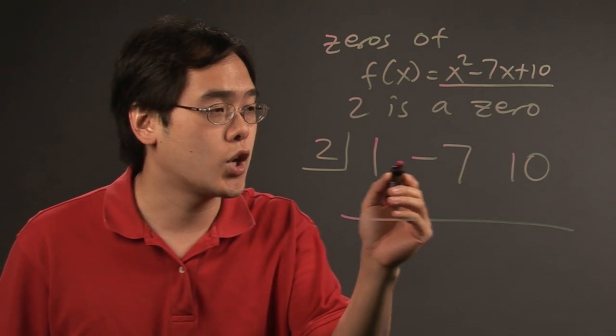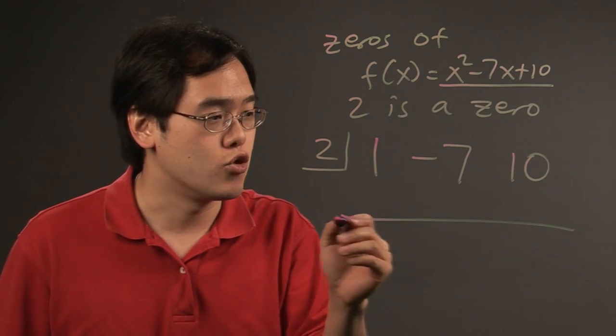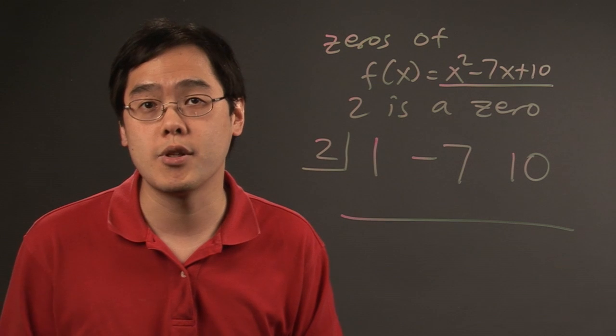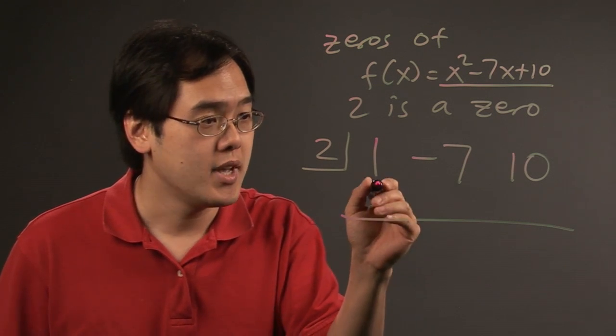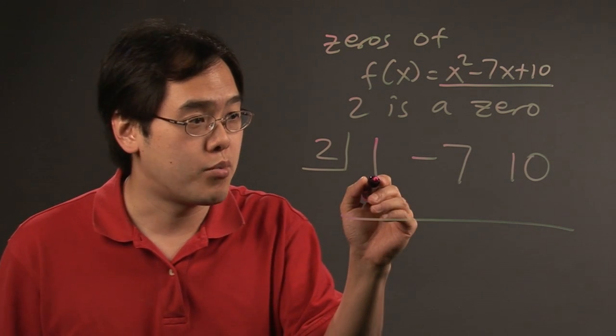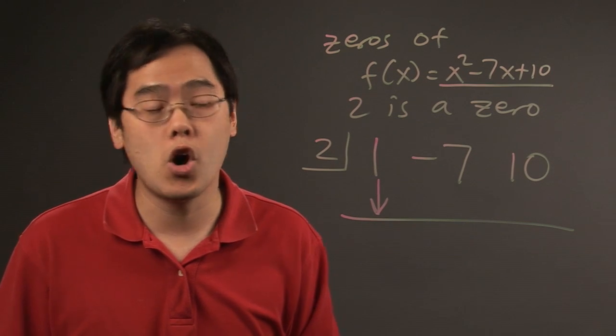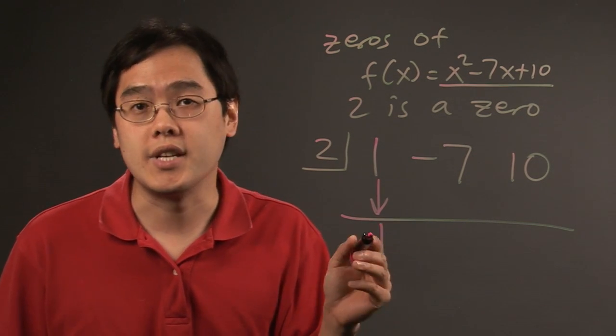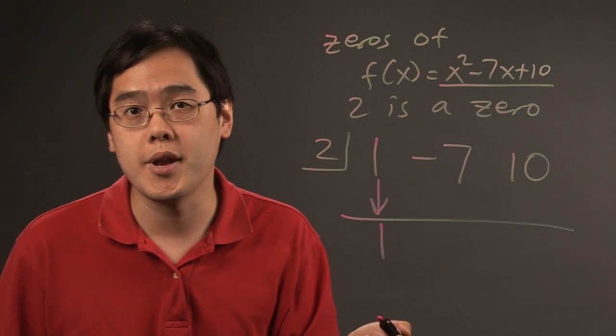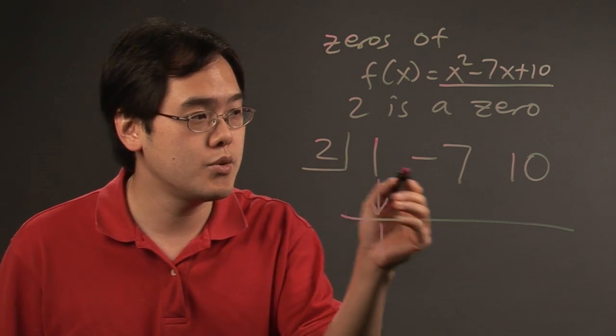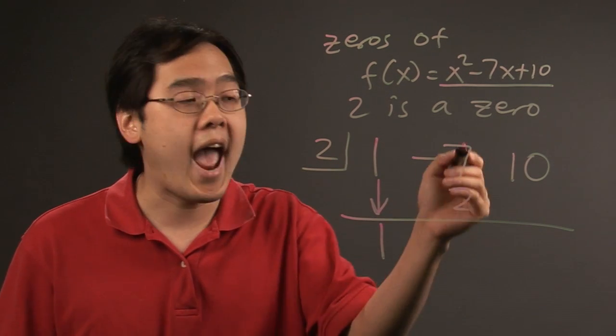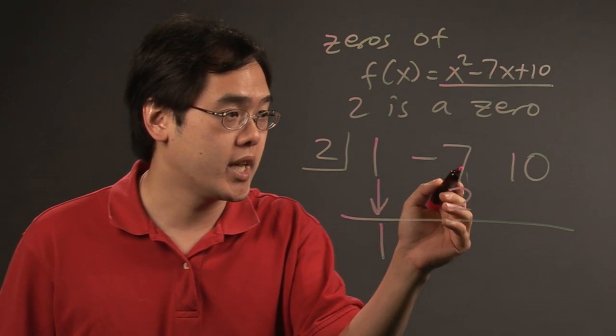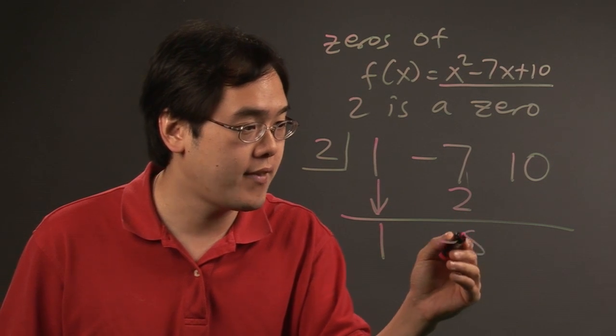In synthetic division, once you have all the coefficients labeled, you draw a dividing line. The process is you bring down the first number always. So you bring down the 1, and take that first number and multiply by the number in the box. 1 times 2 is 2, and you add going forward. Negative 7 plus 2 gives you negative 5.